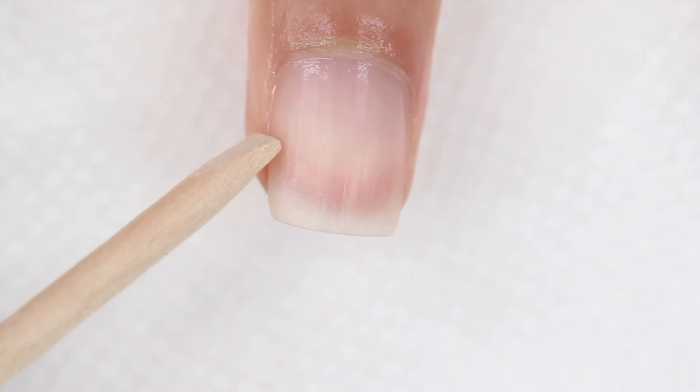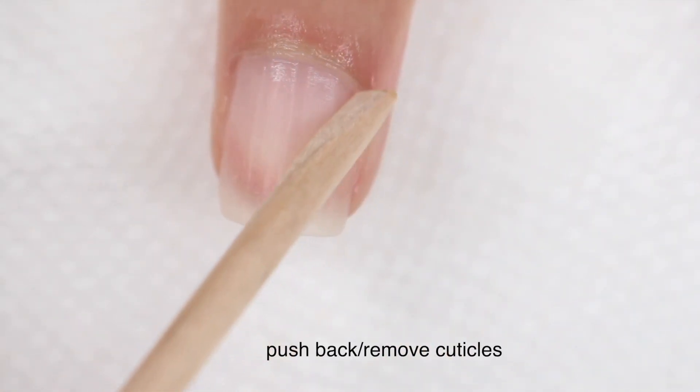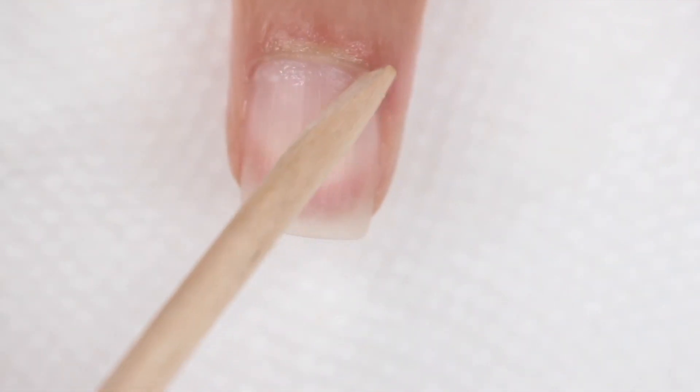But if you do have tougher cuticles or a lot of buildup, then you can also use the metal tool. So basically what I do is turn to the side and just gently start rubbing around my cuticle area. And you'll see that it slowly just rolls off the nail plate, which is kind of gross, but really satisfying at the same time.